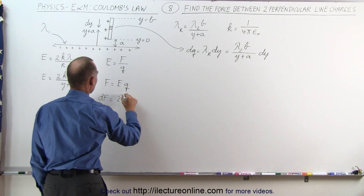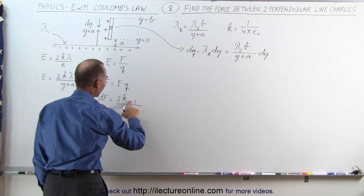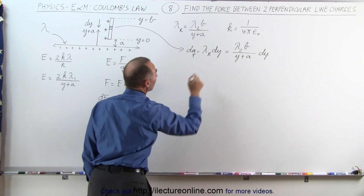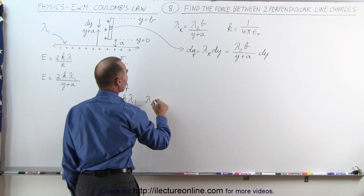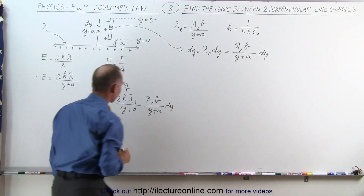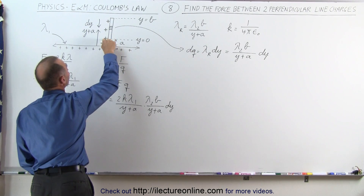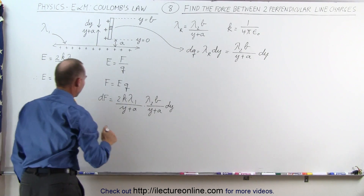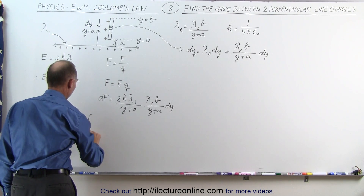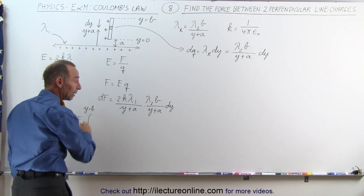Therefore the force felt by that small segment is dF, which equals the electric field at that location — 2kλ₁ divided by (y + a) — times dq. And dq equals λ₂·b over (y + a) times dy. To find the total force we simply integrate from y equals 0 to y equals b across the rod.